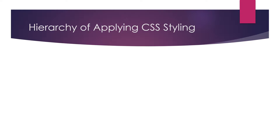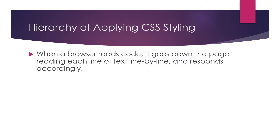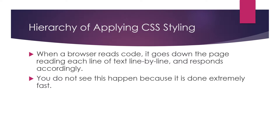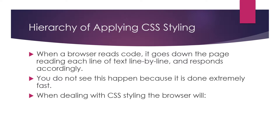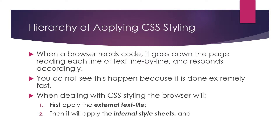The hierarchy of applying CSS styling: when a browser reads code, it goes down the page reading each line of text line by line and responds accordingly. When dealing with CSS styling, the browser will first apply the external text file, then the internal style sheets, and last the inline style sheets. So if you have special coding in the inline style sheets, it will override the internal and the external.